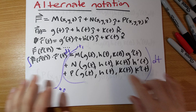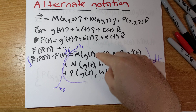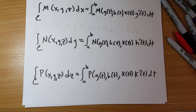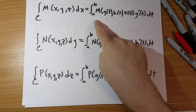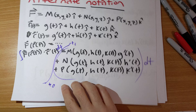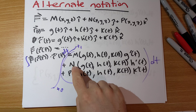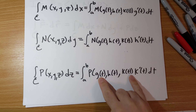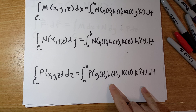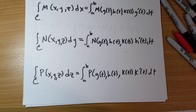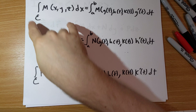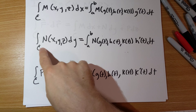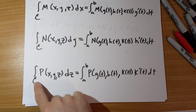Sometimes we want to take a look at these three components separately. We have three terms: the integral of M times g'(t), the integral of N times h'(t), and the integral of P times k'(t). The notation we're going to use is: call this the integral of M dx, the integral of N dy, and the integral of P dz.